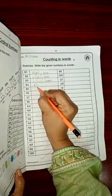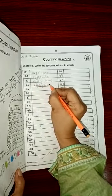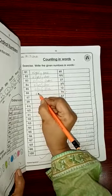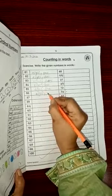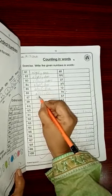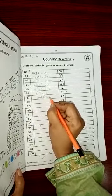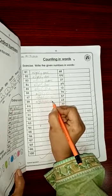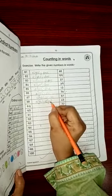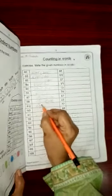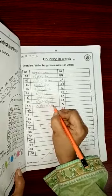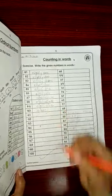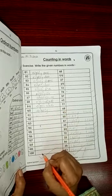80. 82. 83. 85. 86. 87. 88. 89. Oh sorry, 88. 89. 90. N I N E T Y. 90. Class, ab hum yahan pe 91 se 100 tak likhenge counting. Is tarah hamari ye 81 se 100 tak complete ho jayegi counting in words.